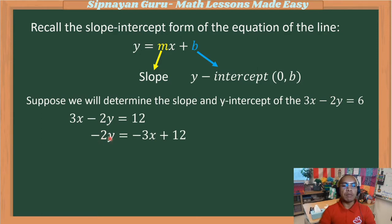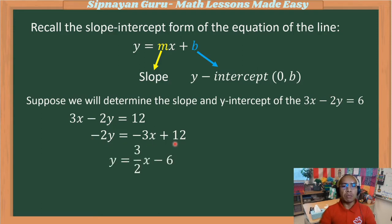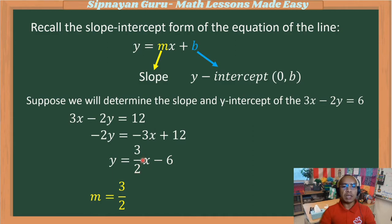We rewrite the equation into y-form. By the addition property of equality, 3x is transposed to the other side, becoming negative 3x, and we copy positive 12. Then we divide both sides by the coefficient of y, which is negative 2. So negative 2y divided by negative 2 gives y; negative 3 divided by negative 2 gives positive 3 over 2x; and positive 12 divided by negative 2 is negative 6. So the slope is 3 over 2 and the y-intercept is negative 6.